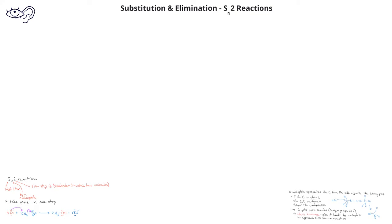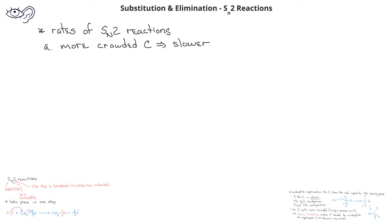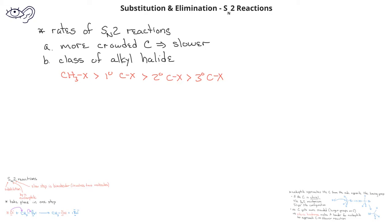Other things that affect the rate of SN2 reactions are the type of carbon bonded to the halogen. Methyl halides will have much faster SN2 reactions than primary alkyl halides, which in turn will be faster than secondary alkyl halides, which in turn will be faster than tertiary alkyl halides. In fact, tertiary alkyl halides are so slow that they essentially will not undergo SN2 reactions.